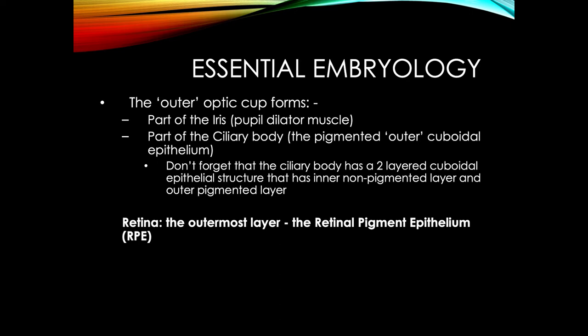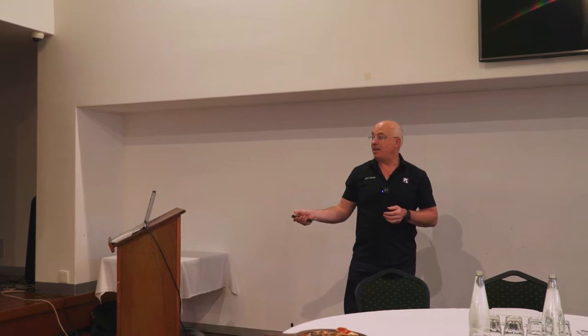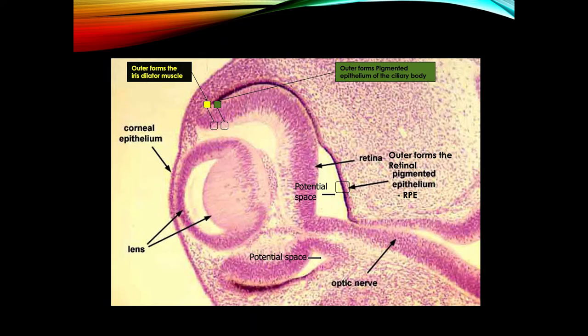The outer aspect of the optic cup forms part of the iris — specifically the pupil dilator muscle — part of the ciliary body, this time the pigmented outer layer, and then the retinal pigment epithelium itself, the RPE. Here is the iris dilator, here is the pigmented aspect of the ciliary body, and here is the RPE.